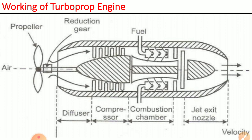In the turboprop engine, 80 to 90 percent of the thrust is produced by acceleration of the air outside the engine by the propeller. The remaining 10 to 20 percent of the thrust is produced by the jet exit of the exhaust gas itself.